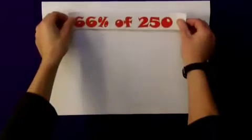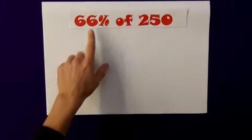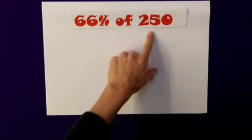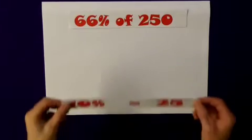What about this one, then, for a really nasty-looking one? It's really not that difficult. 66% of £250. Well, again, I would start by finding 10%.